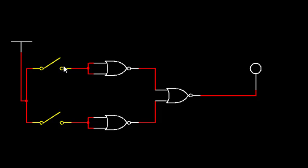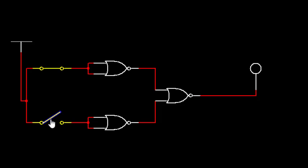Here we have three NOR gates working as an AND gate. Input 0 0 gives output 0; 0 1 gives output 0; 1 0 gives output 0; and 1 1 gives output 1. So input 1 1 gives output 1 and all others are 0 — this is how an AND gate works, so this is NOR as AND.